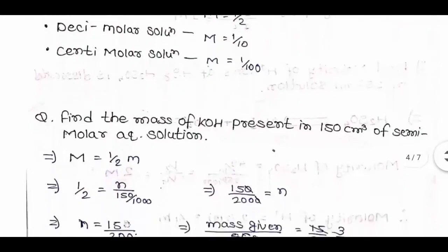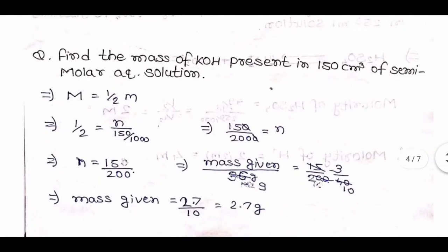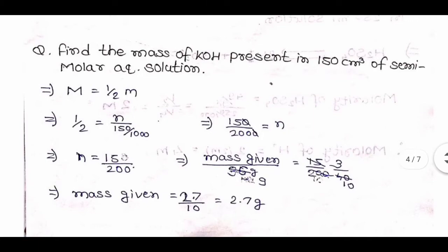Question: find the mass of KOH present in 150 cm³ of a semi-molar aqueous solution. Since it is semi-molar, molarity = 1/2. So: 1/2 = n / (150/1000), which gives n = 150/2000 = 15/200 moles. Therefore mass = (15/200) × 56 = 2.7 grams.